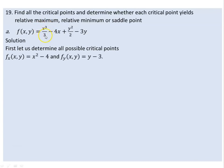With respect to x: x³ comes down and cancels 3, giving x² equal to 0, so x is equal to 0. With respect to y: the derivative gives 2y minus 3, and the derivative of 3y is equal to 3, so it equals 1.